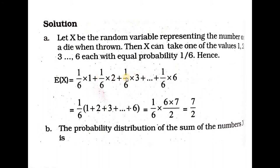Taking out the factor 1/6, we sum 1 through 6. The total is 21, so E(X) equals 21/6 equals 7/2. The answer is 7/2.